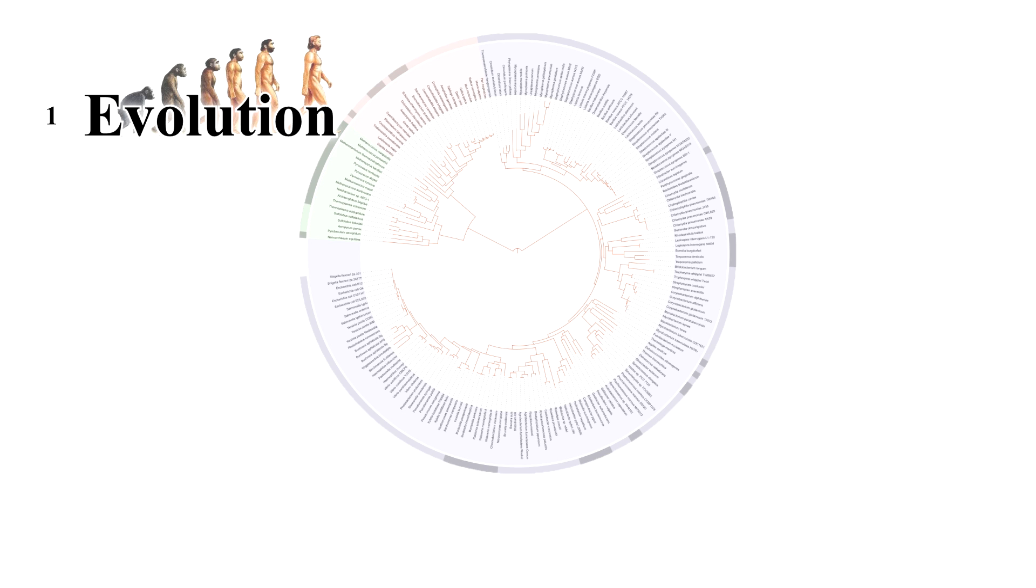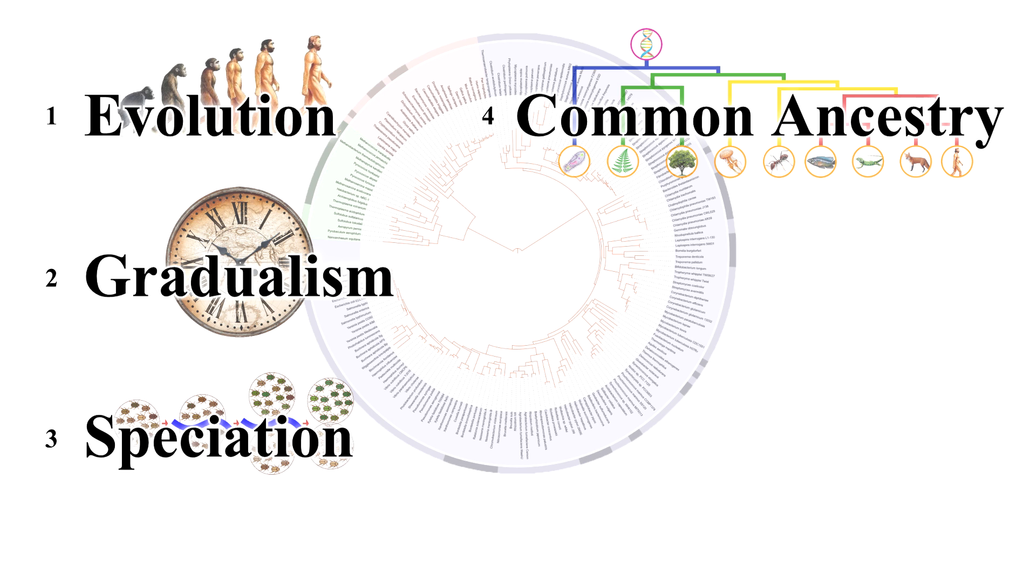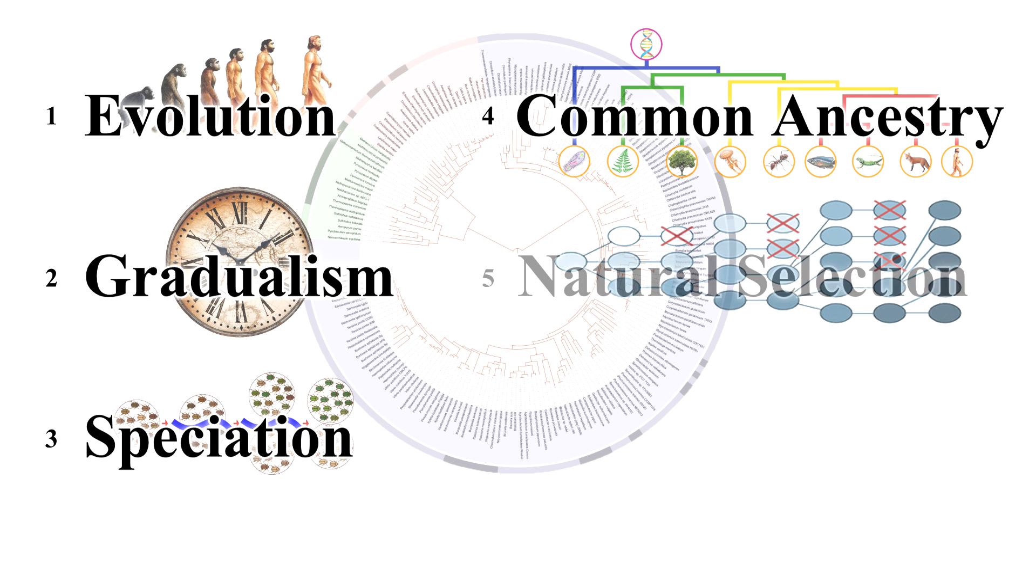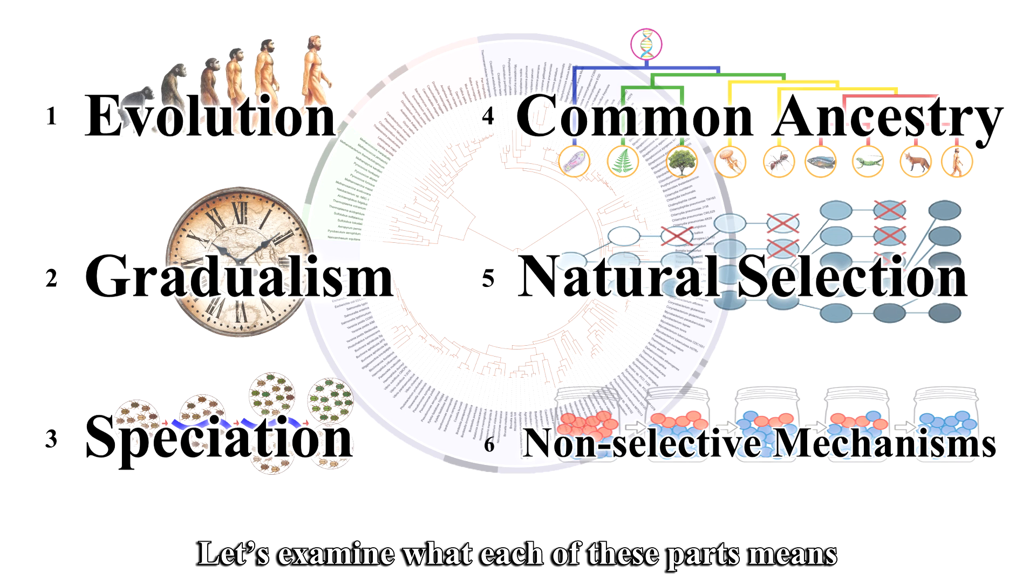Evolution, gradualism, speciation, common ancestry, natural selection, and non-selective mechanisms of evolutionary change. Let's examine what each of these parts means.